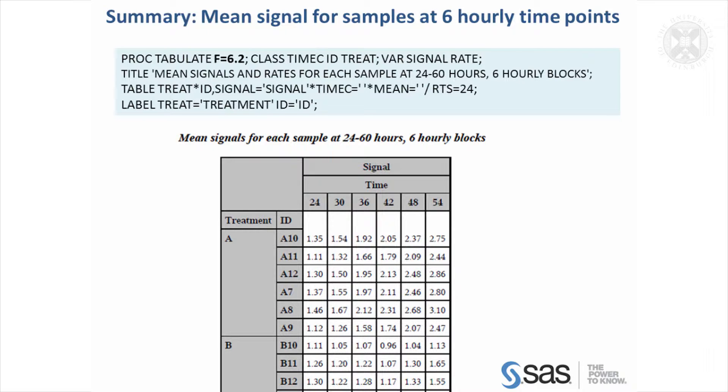Just want to reiterate some of these options that go into the Proctabulate procedure. This F1 gives you the column width, so we're now saying we want a column width of 6, so we've got quite narrow columns because we might want to fit quite a lot on the table.